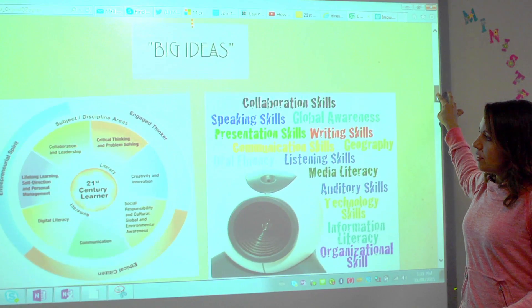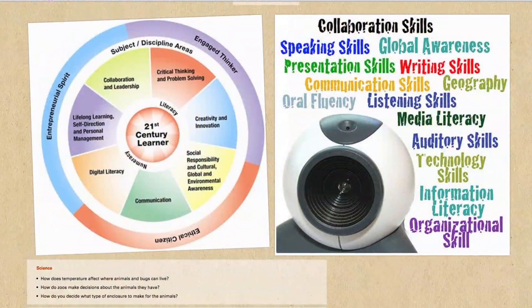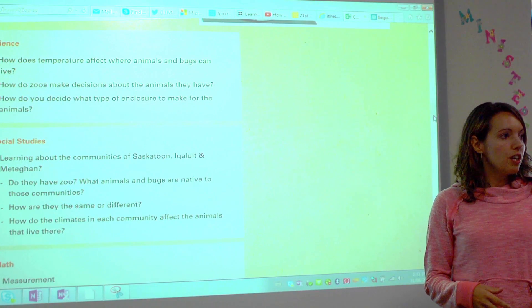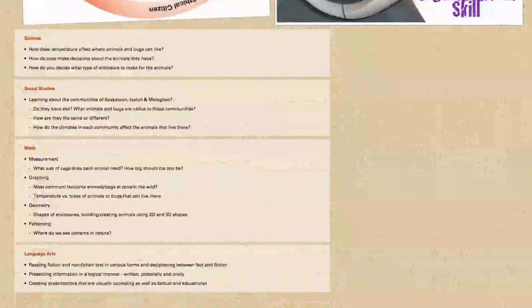Big ideas — obviously using our 21st century learning skills — it goes cross-curricular through the four cores. In science, we have hot and cold temperatures, so I want to look at zoos around the world and how temperature affects the animals you have in your zoo. Going back to Lucy — she's an African elephant — how does living in Edmonton affect her? How does climate affect the choices you make for your zoo, how do zoos make that decision?